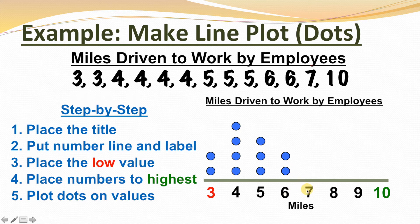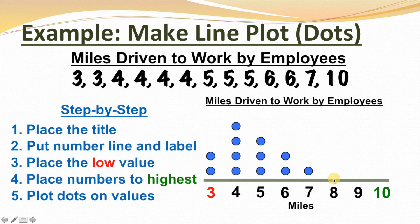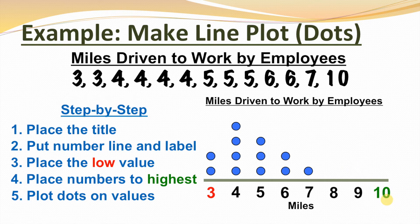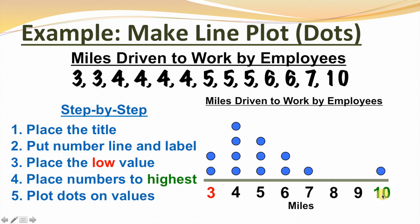For seven — there's one seven in our data, so we'll put one dot. That means there's only one employee that drives seven miles to work. For eight — there's no eight in our data, so we just won't put any dots. Because it's blank, that just means nobody drives eight miles to work. Same for nine — there are no nines, so we'll leave this blank. Nobody drives nine miles to work. And for ten — there's one ten, so we'll have one dot on top of ten. Only one employee drives ten miles to work.